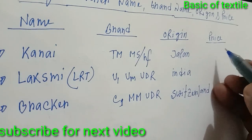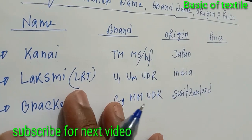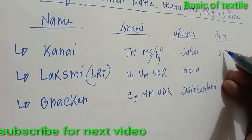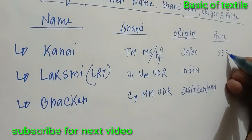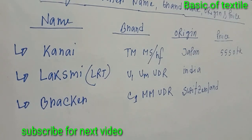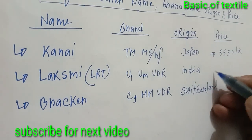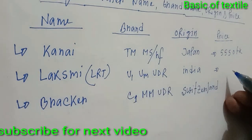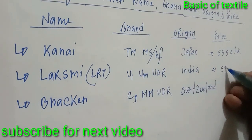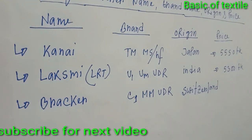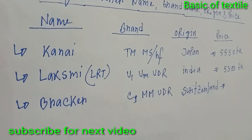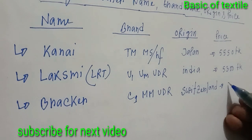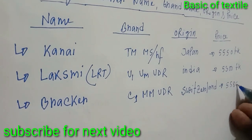Then price: Kanai price is 5550 Taka. Then Lakshmi LRT price is 5300 Taka. Then Rekar price is 5580 Taka.